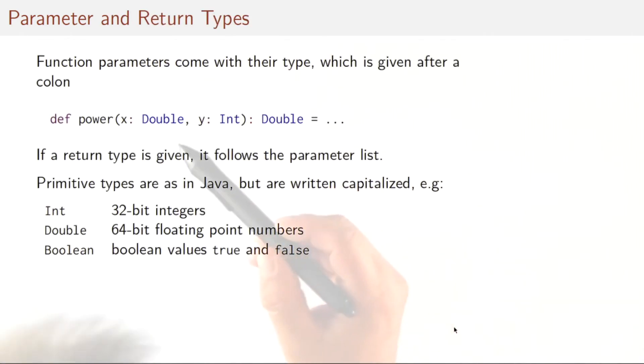Function parameters come with their type, and this type is given after the parameter list. The primitive types are written as in Java but they are capitalized. So int for example is a 32 bit integer. Double is a 64 bit floating point number. And boolean represents the boolean type with values true and false.